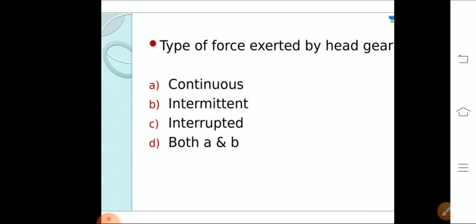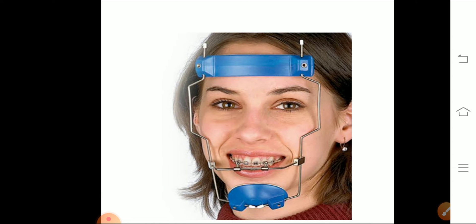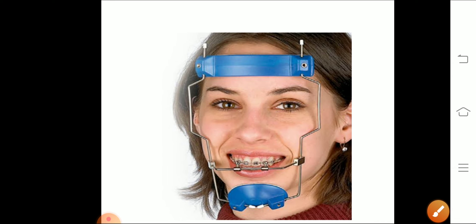Now next question. The type of force exerted by headgear. The first option is continuous, second is intermittent, third is interrupted, and fourth option is both A and B. So the type of force exerted by headgear is interrupted force. That means C option is correct. This figure is representing the headgear. If you get an image based question, you can easily identify this image is of headgear.